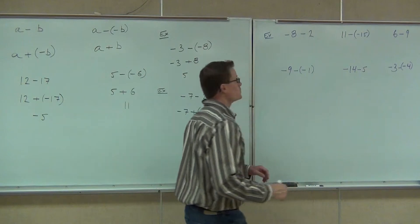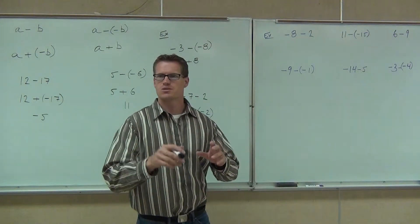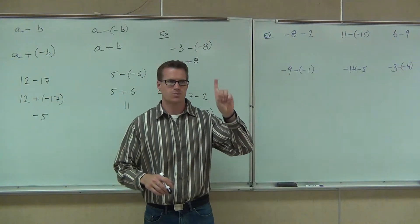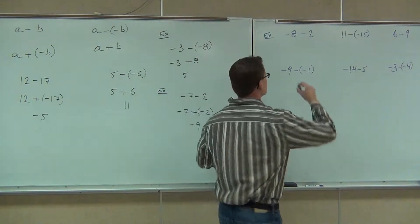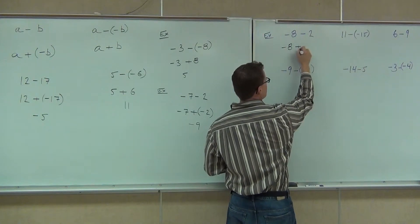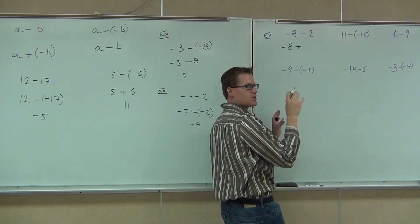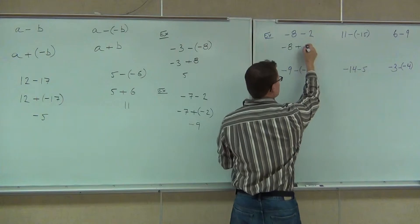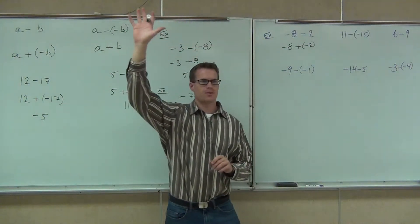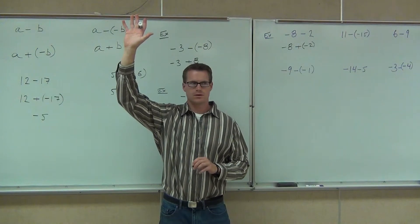So we have negative 8 minus 2. We're not changing the negative 8. We are changing the minus 2. Remember this, you're going to change 1 sign into 2 signs or 2 signs into 1 sign. That's what we're doing. So here we do negative 8. We can't just make it a plus, but we can make it a plus as long as we make the 2 a negative. What I want to know is how many people did that right there. Good, that's good.